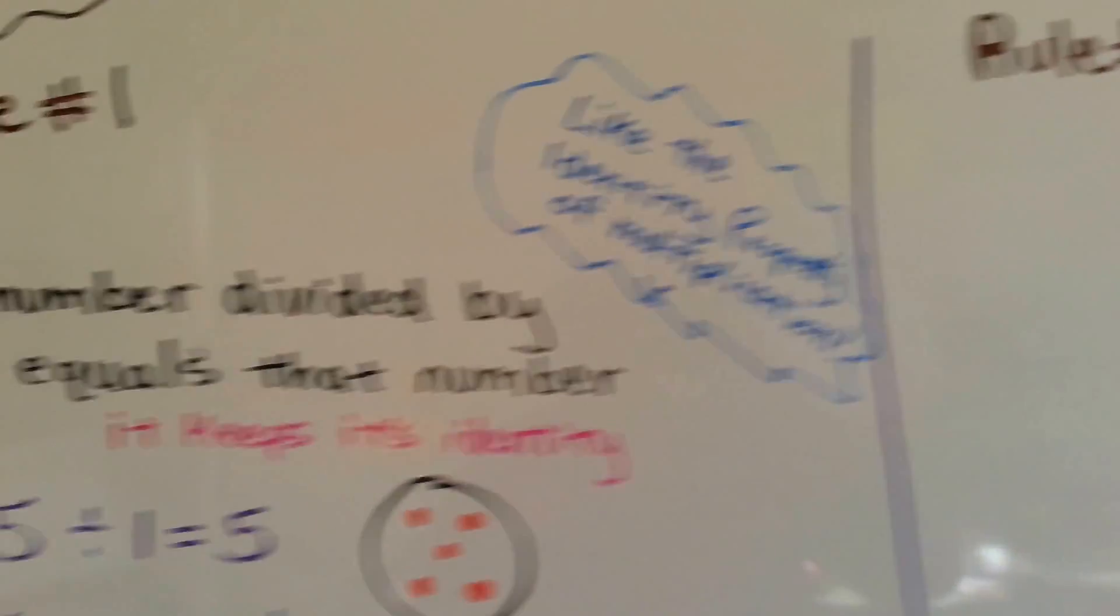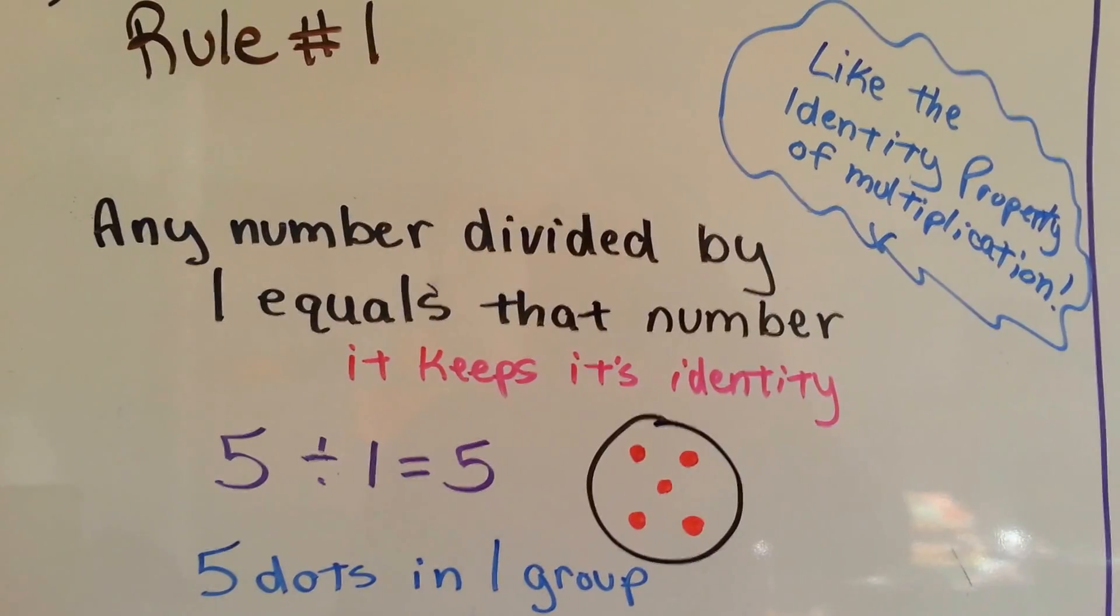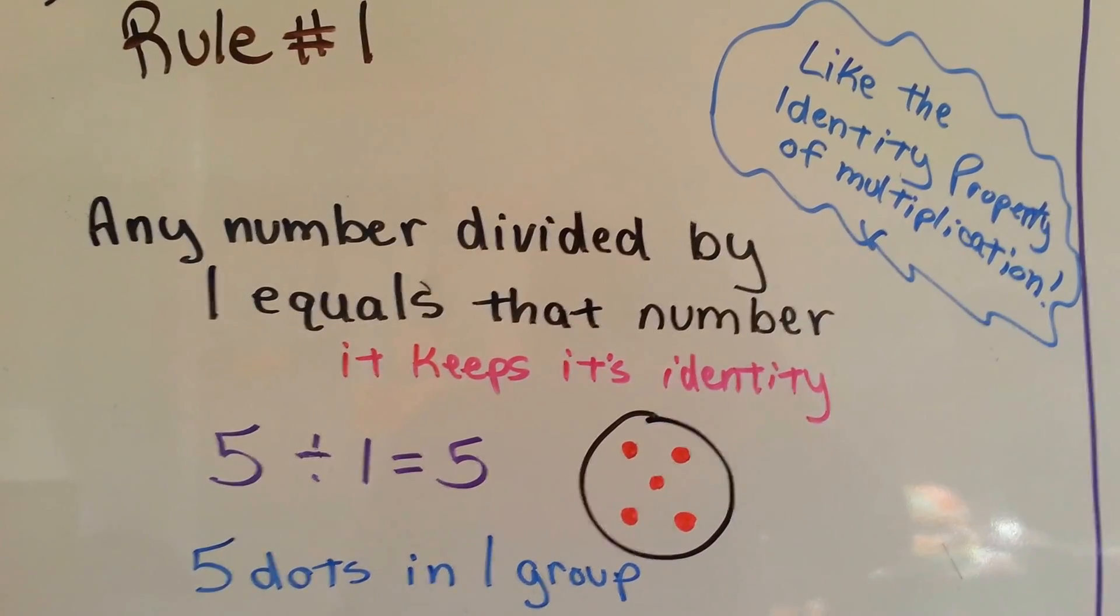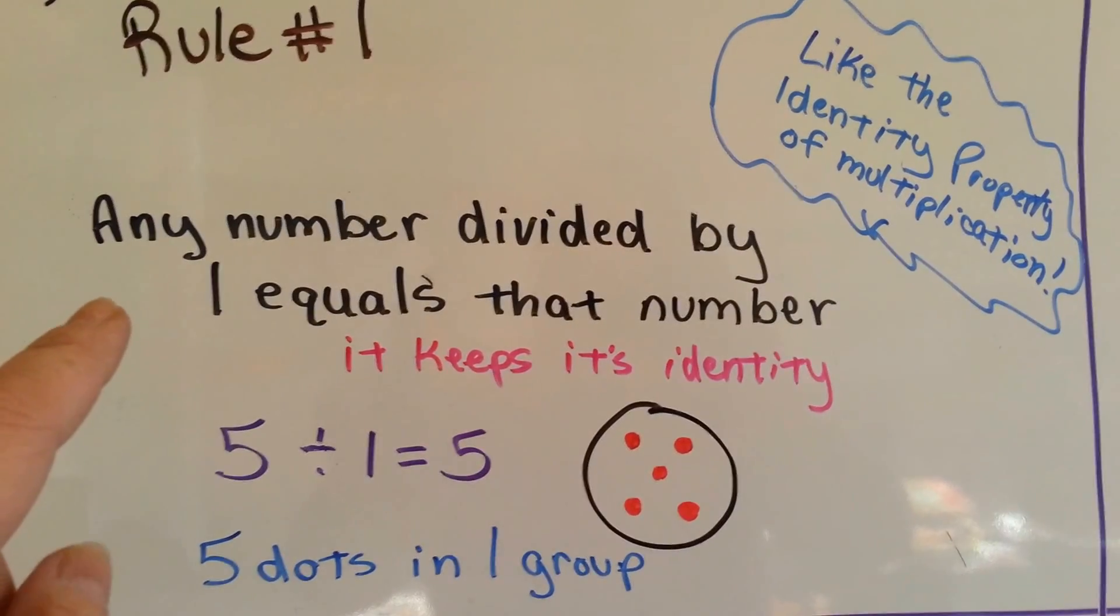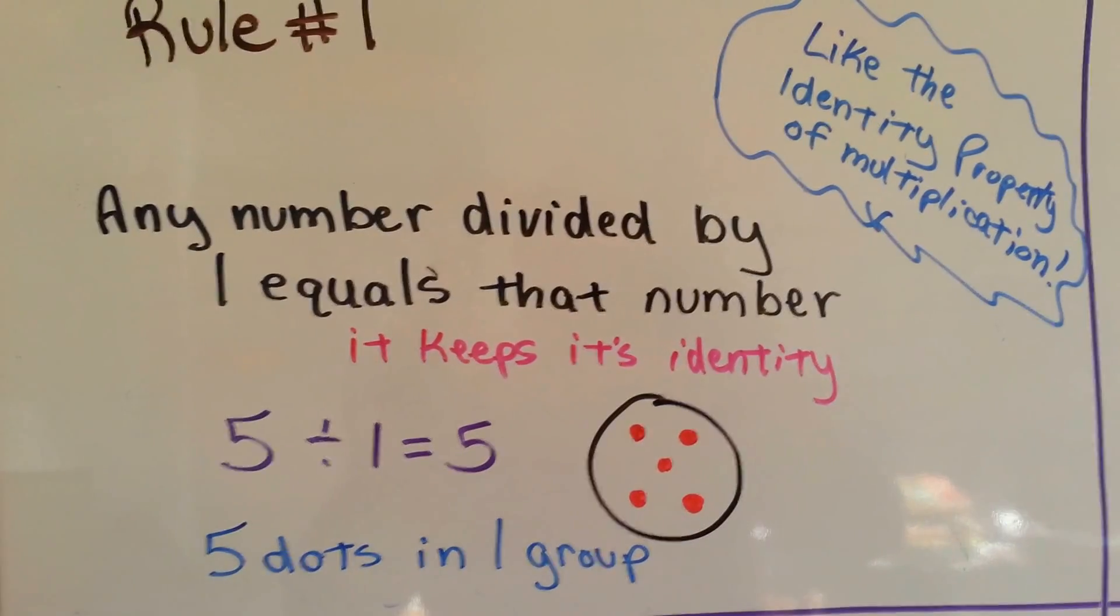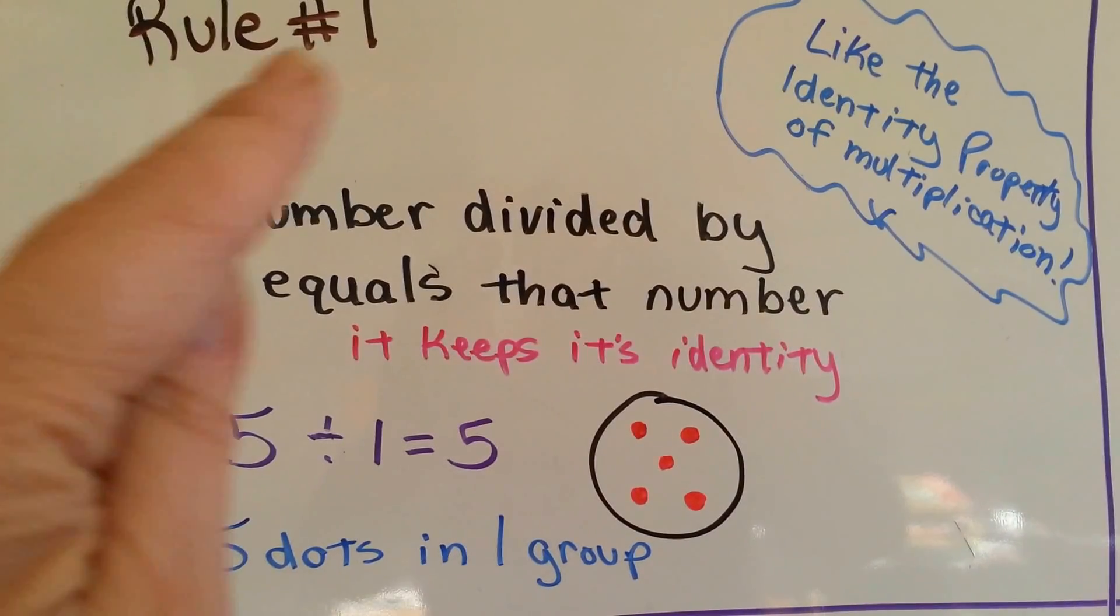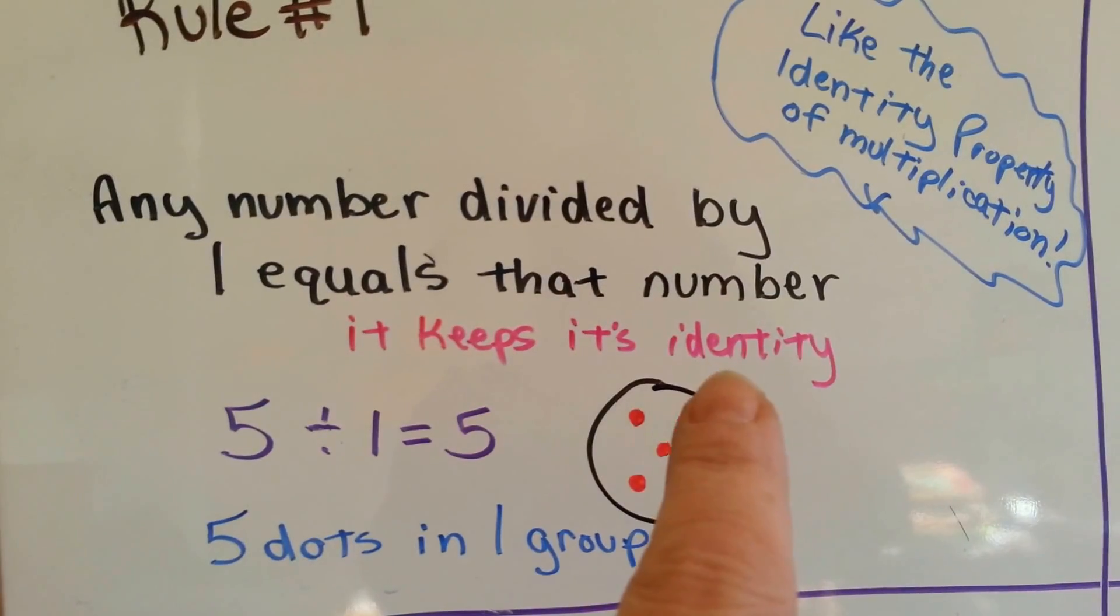So let's look at our first rule. Rule number 1. This is like the identity property of multiplication where it keeps its identity. Any number divided by 1 equals that number. If you are taking notes, you should write down rule number 1, any number divided by 1 equals that number. It keeps its identity.